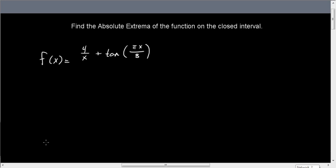In this video, we're going to find the absolute extrema of a function on the closed interval. This function is going to be f(x) equals 4 over x plus tangent of pi x over 8. And our interval that we're going to be considering this on is the closed interval [1, 2].